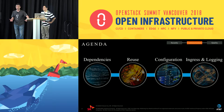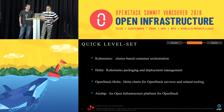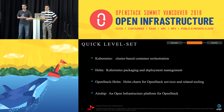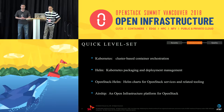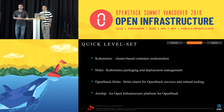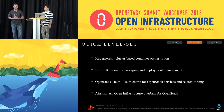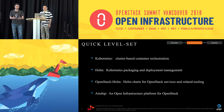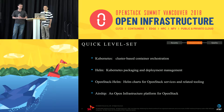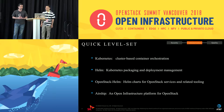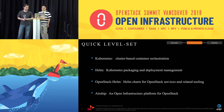We will touch on dependency use, reuse of code, configuration, ingress, and logging. So a quick level set — you may know all this already, but just in case: Kubernetes is an orchestration platform for containerized applications. Helm is a packaging and deployment manager that allows you to deploy complex applications into Kubernetes. OpenStack Helm is a project of Helm charts that allows you to deploy OpenStack services into Kubernetes to get the resiliency and deployability that provides. And Airship is a new sister project of OpenStack Helm, which provides a Kubernetes-based undercloud, as well as advanced Helm-based tooling to deploy applications like OpenStack Helm on top of Kubernetes.